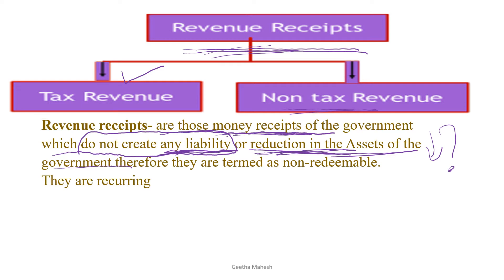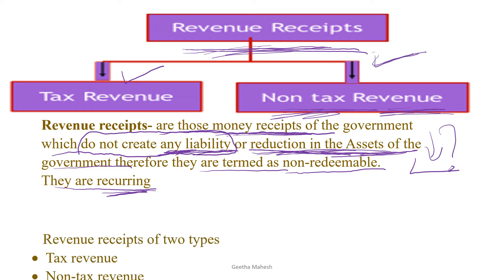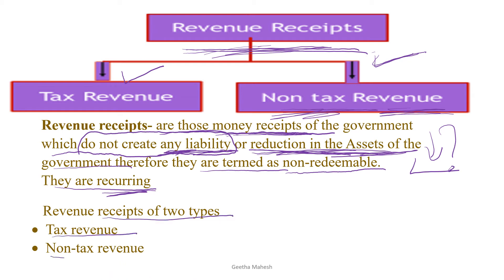Non-tax revenue is the income earned by government companies. They are termed as non-tax revenue. Again, they are recurring — every year the tax is paid, and the company income comes to the government every year. The revenue receipts are of two types: tax revenue and non-tax revenue.